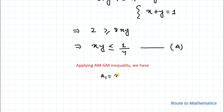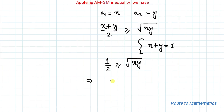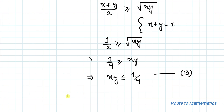Now let's apply the AM-GM inequality. Taking the first term as x and the second term as y, by AM-GM we have (x + y)/2 greater than or equal to the square root of xy. Substituting x plus y equals 1, we get 1/2 greater than or equal to root of xy, which implies xy less than or equal to 1/4. Let's call this equation B.